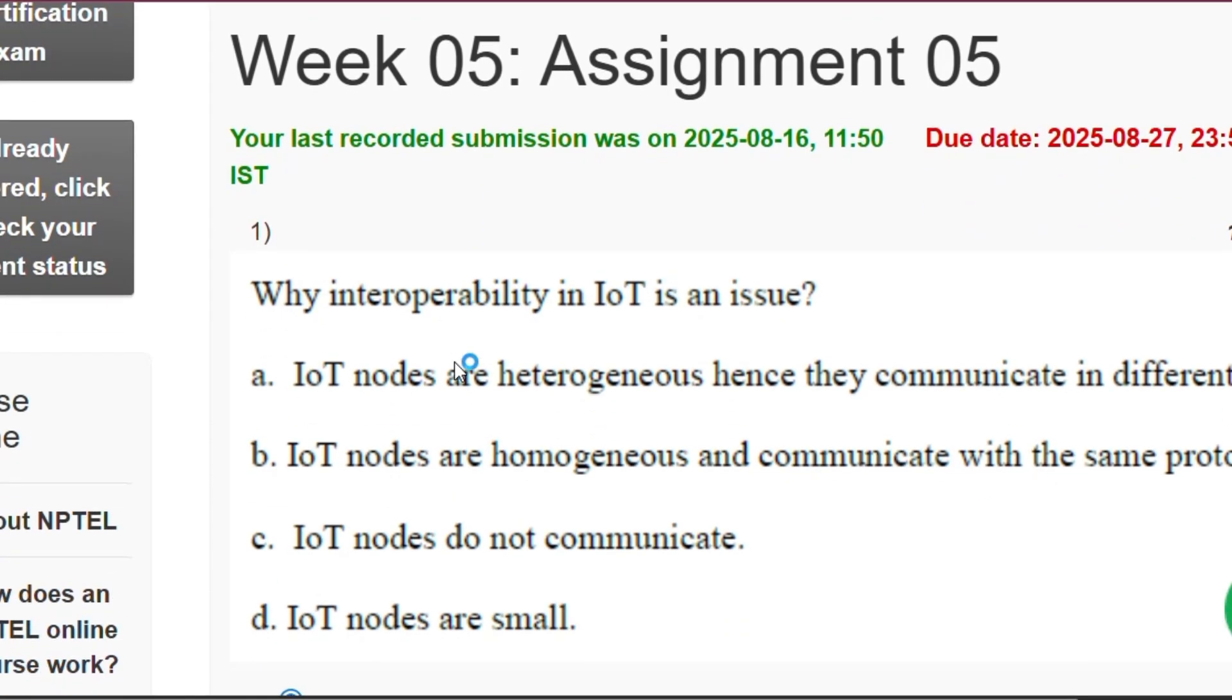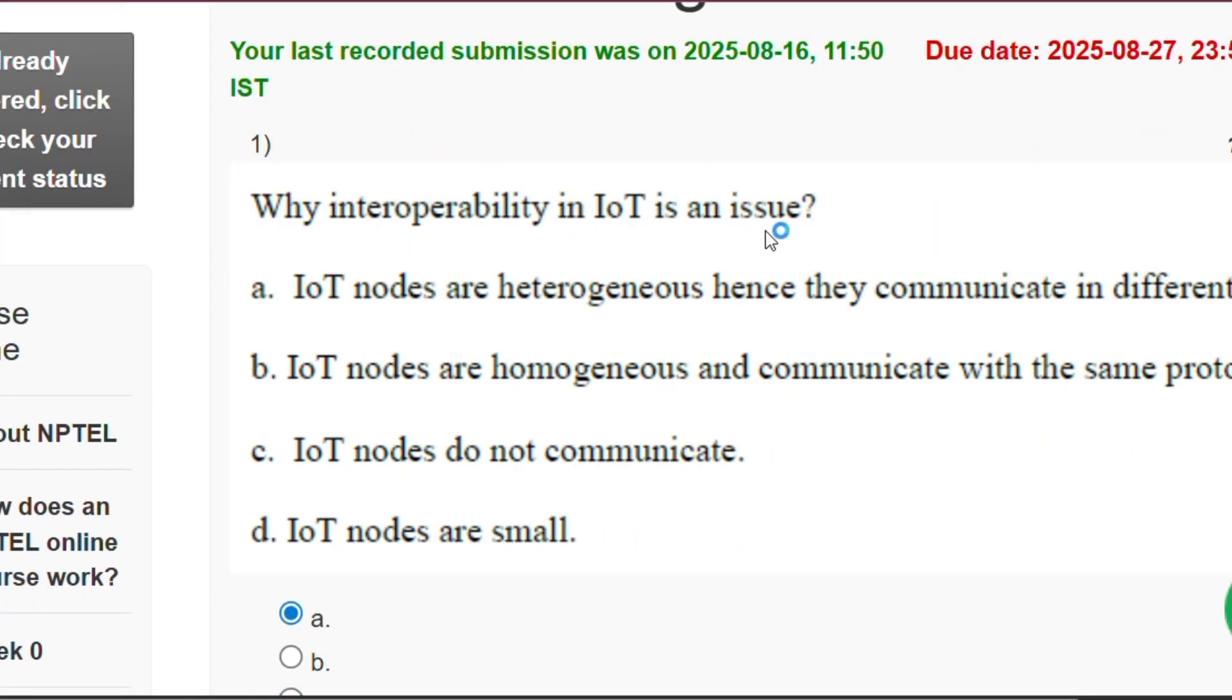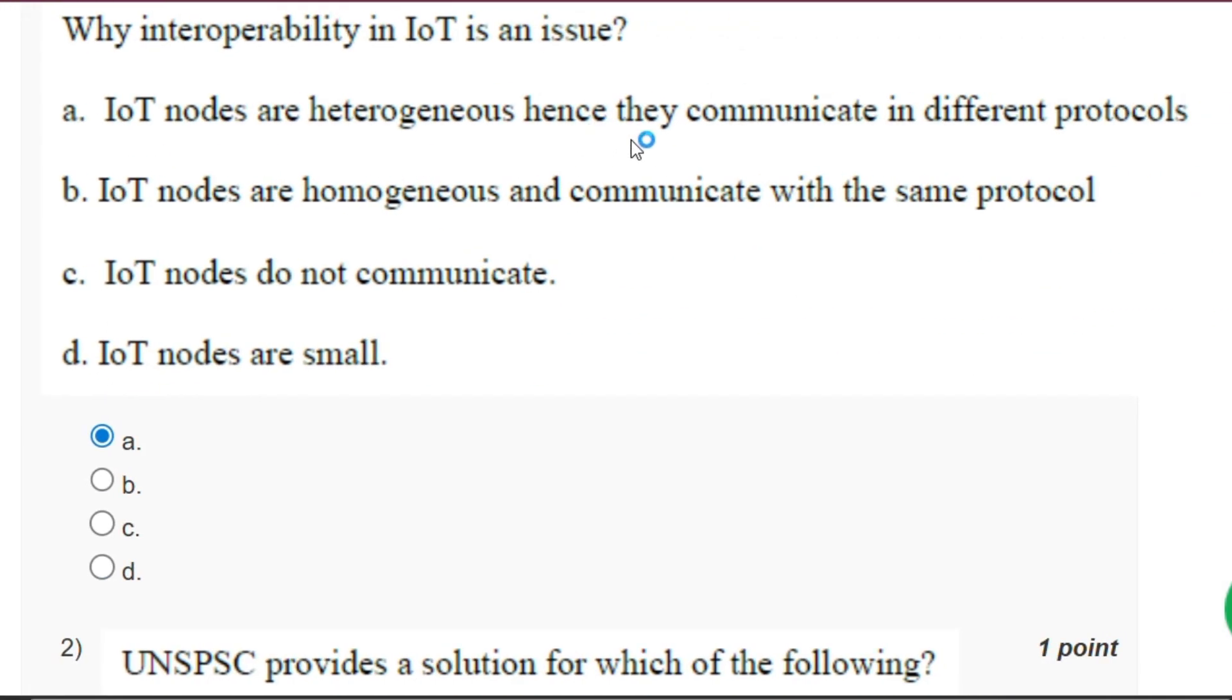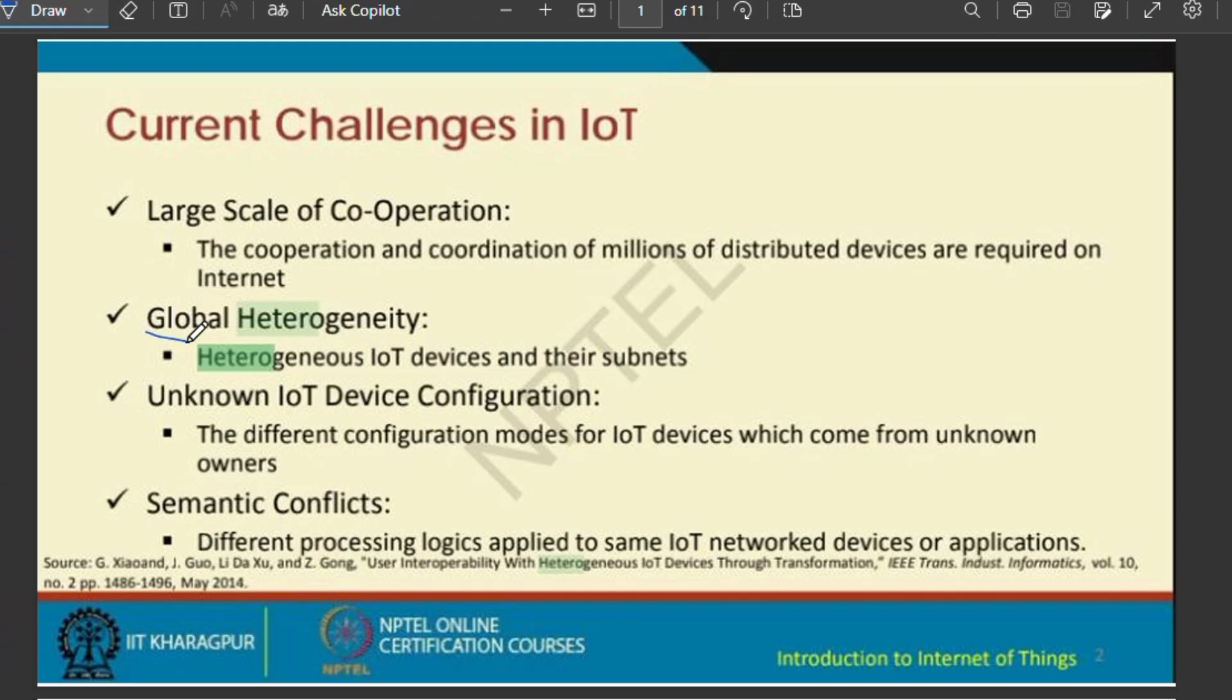So please do subscribe. The first question is: Why interoperability in IoT is an issue? The answer will be option A, that IoT nodes are heterogeneous hence they communicate in different protocols. And here is the proof that global heterogeneity that the current challenges in IoT.